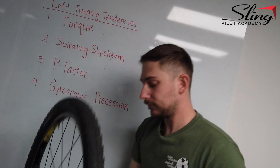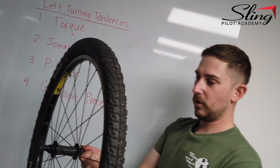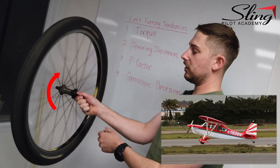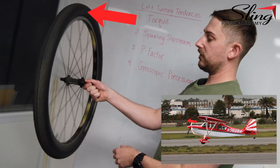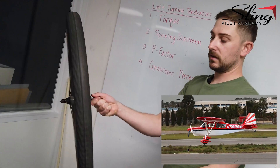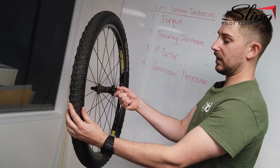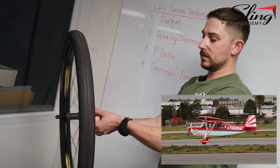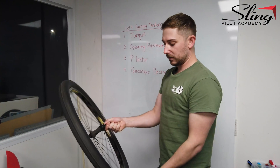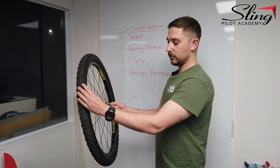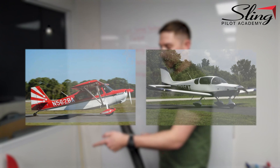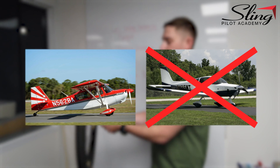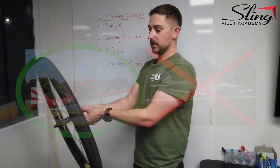An example you might find in an aviation classroom: as the blade is turning to the right, if you pitch forward, it actually wants to turn to the left — this is involuntary. This is also how helicopters fly — it's all the same principle. This doesn't happen in a tricycle gear aircraft as much, but it's important for a tail dragger.